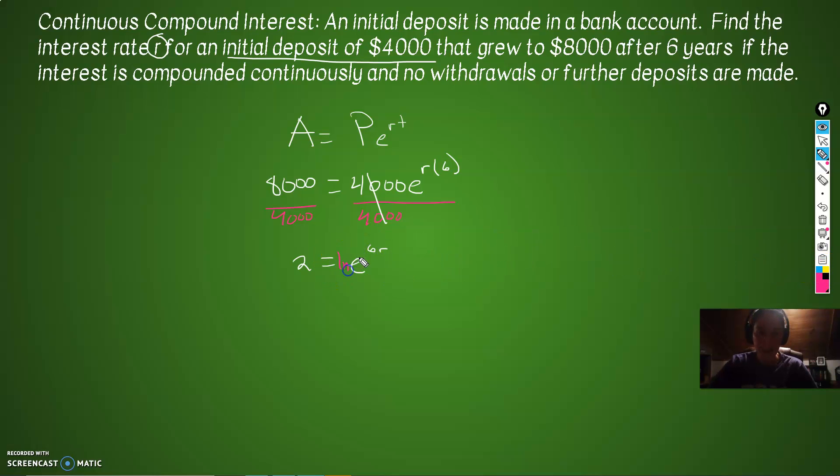However, will we undo the E? Oh, with our friend LN here. Almost sounds like I'm saying my friend LN. So we have LN of 2. These guys cancel out because they are inverses. Divide both sides by 6 to get our R.